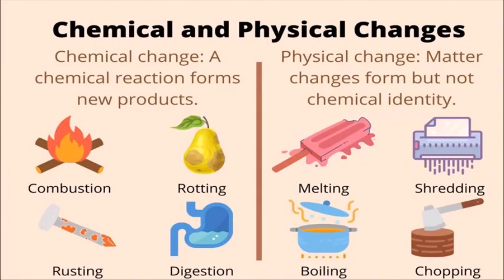Chemical changes are permanent and irreversible, while physical changes are temporary and reversible. In a chemical change, a new substance is formed and cannot be reversed back. For example, rotting cannot be reversed, and rusting cannot be reversed — these are chemical changes.